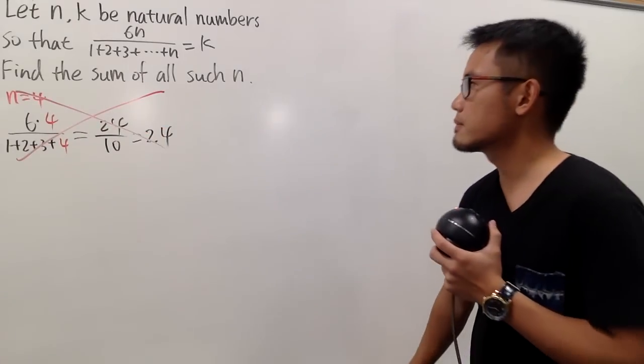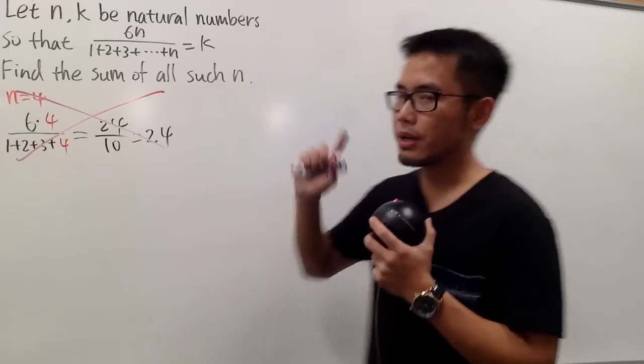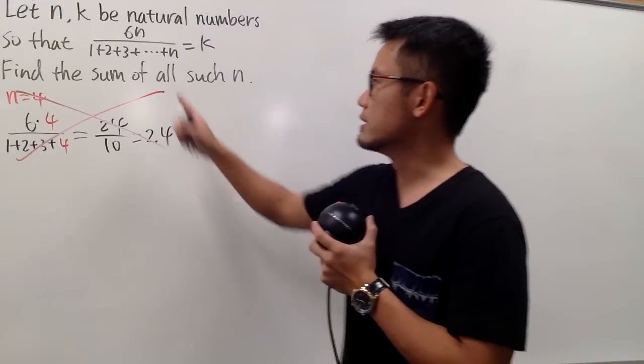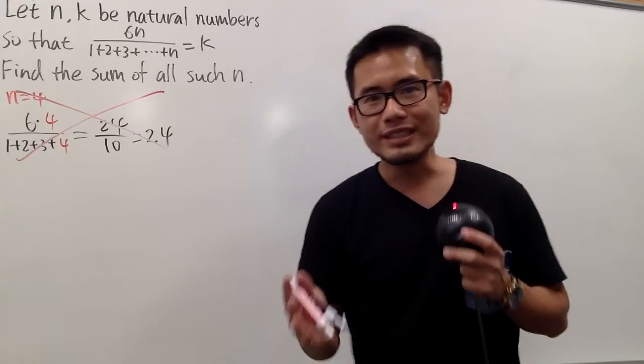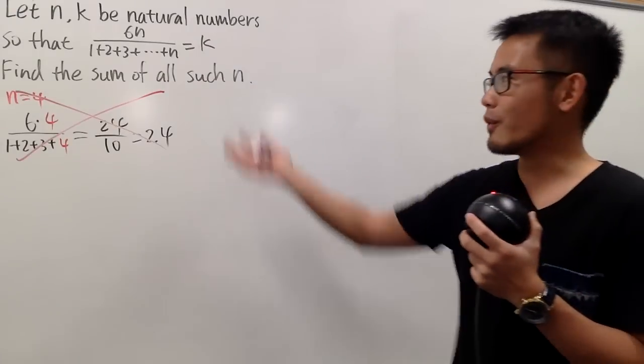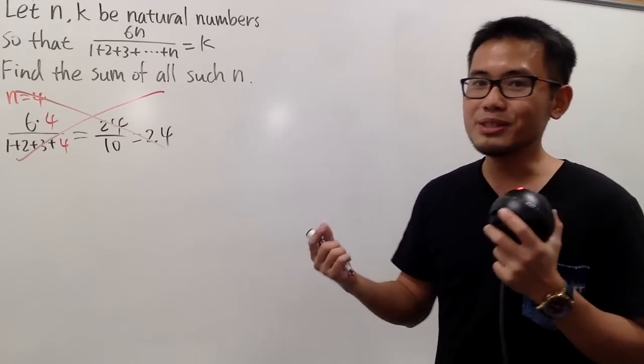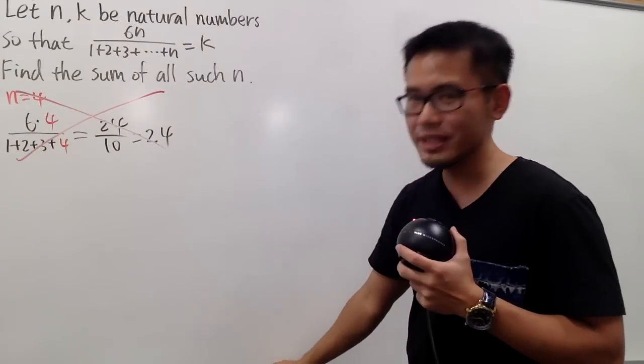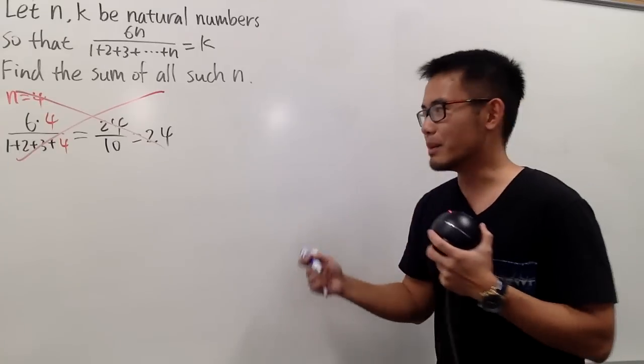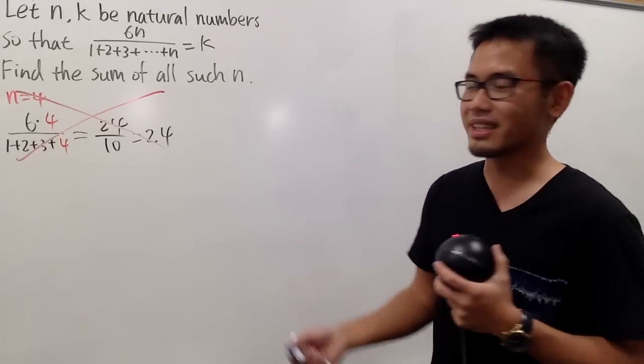And now, here is the deal. As we can see, perhaps the most complicated part is this: 1 plus 2 plus 3 plus 4 up to n, right? And of course, I know some of you guys know the formula for that already, but let me just spend some time to show you how I will come up with a formula for this. There are so many ways, and in fact, I did this in a previous video as well, but let me just do this again.